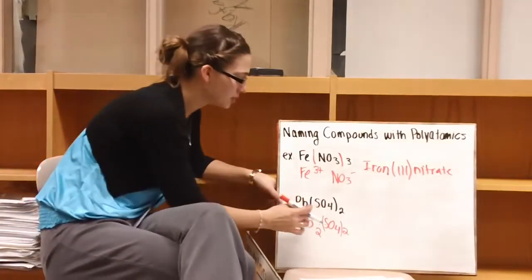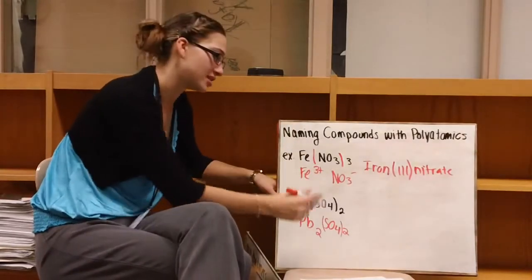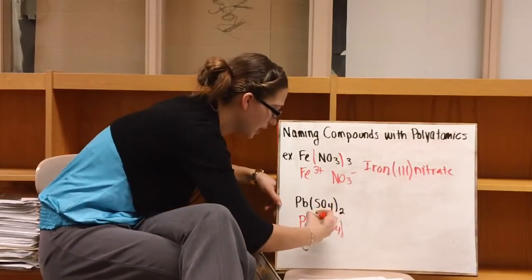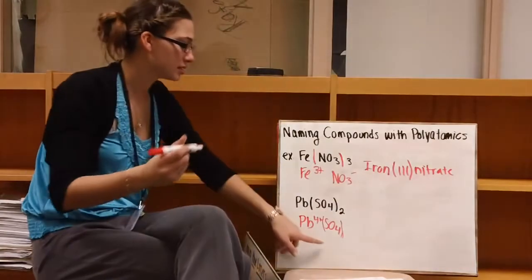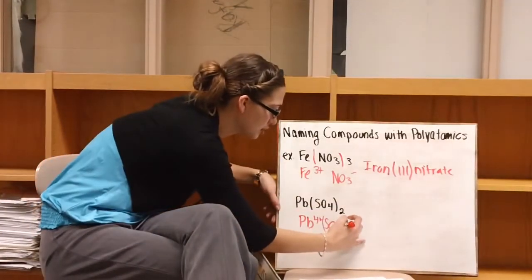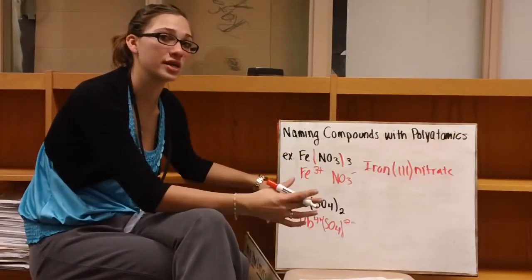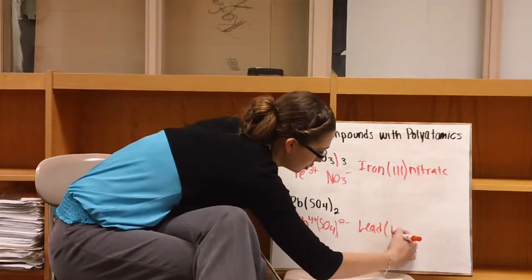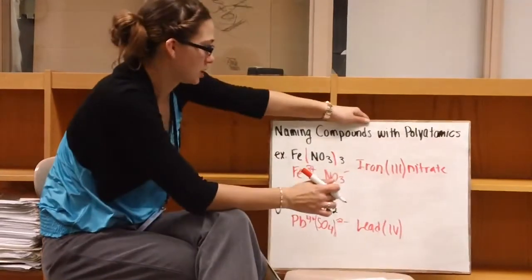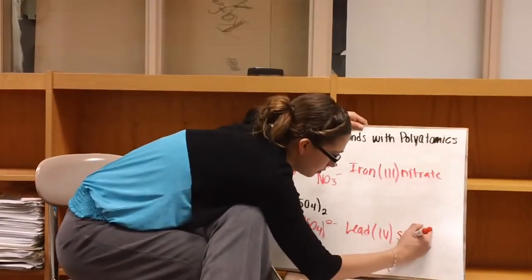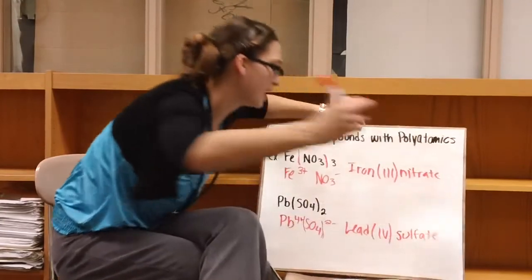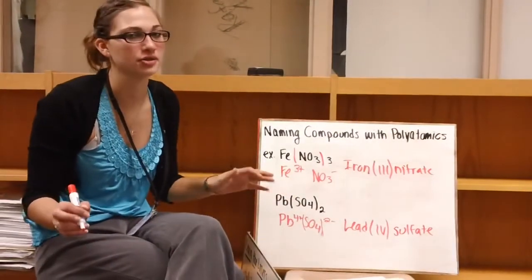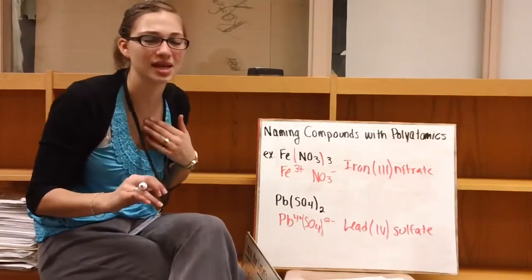So we know that we would have to multiply the charge of Pb by two, since there's two of those SO4. So the charges here would actually be 4+, and then SO4 would have the charge of 2-, which we know that because we memorized that. So now we can write this as lead(IV) sulfate. It might take a little time in order for you to realize what the charges are, but once you have the charges down and you have memorized all the polyatomic ions, it will become easier.